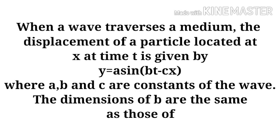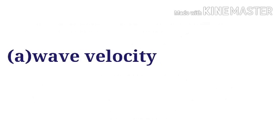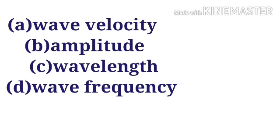The dimensions of B are the same as those of - and the options are: Option A, Wave Velocity. Option B, Amplitude. Option C, Wavelength. Option D, Frequency.